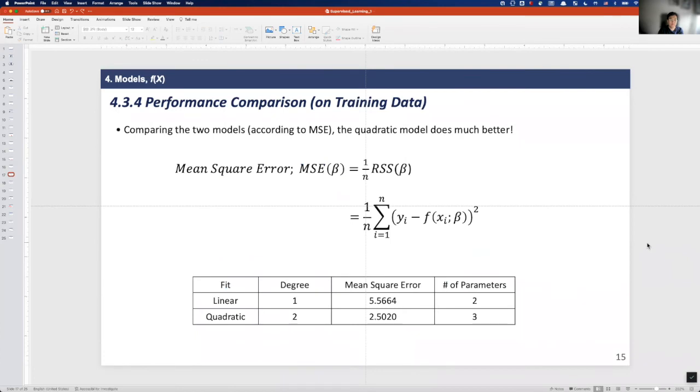Now we need to know the model's performance. And to do that, we can use the mean square error, MSE, metric. As you can see here, the quadratic model does much better.